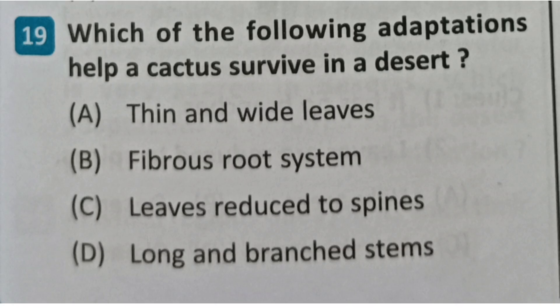Next question: Which of the following adaptations helps a cactus survive in a desert? Options: thin and wide leaf, fibrous root system, leaf reduced to spine, long and branched stem. The correct answer is C - leaf reduced to spine.